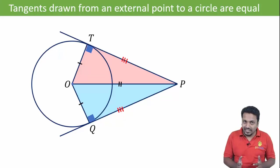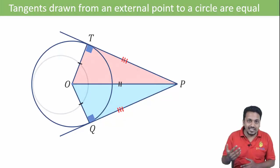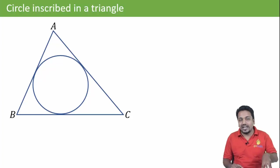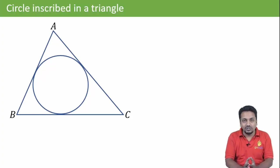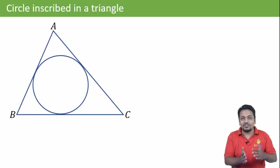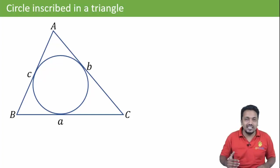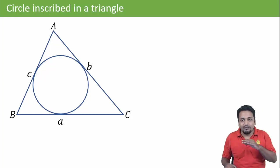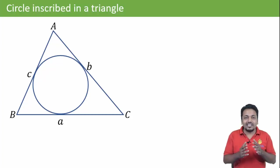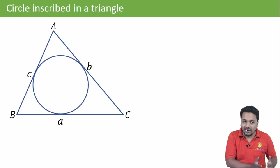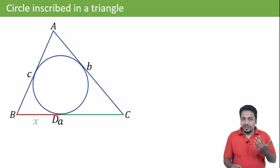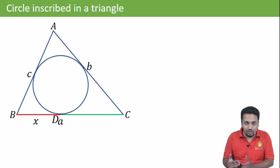This property can be used in the case of an incircle where the three sides of a triangle touch the circle, so they are nothing but tangents to the circle. If the lengths of three sides are given as a, b, and c, and the length of BC is a, then we can calculate the individual lengths of the two parts BD and DC. If the length of BD is x, then the length of the other tangent from B will also be x, since tangents from the same external point are equal.